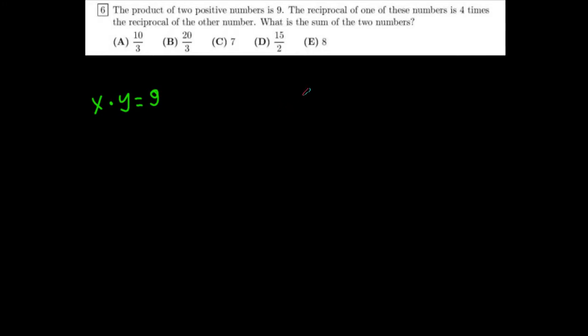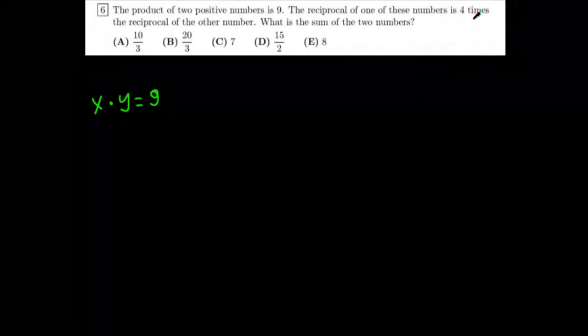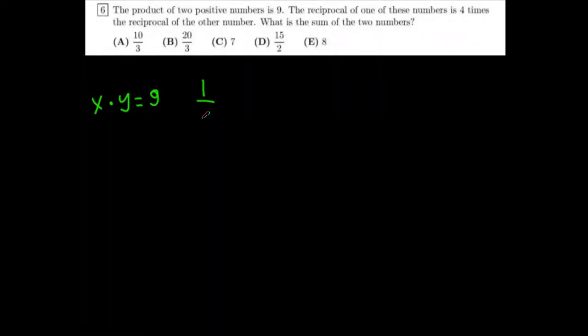Okay, and the reciprocal of one of these numbers is four times the reciprocal of the other number. So let's say x. The reciprocal of x is just one over x. And it's four times the reciprocal of the other number. Well, the reciprocal of y would be one over y. And so, four times one over y is four over y. So, one over x is equal to four over y.